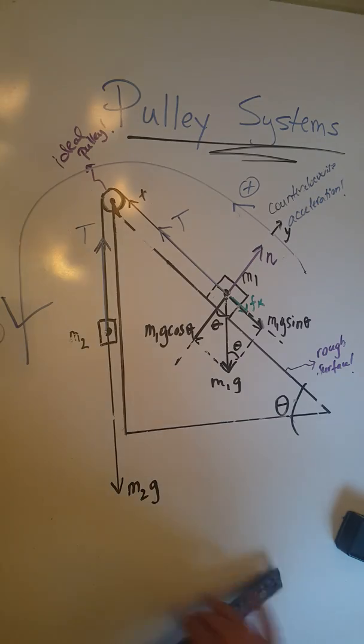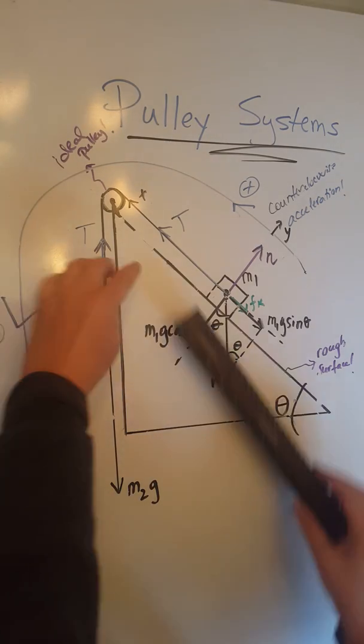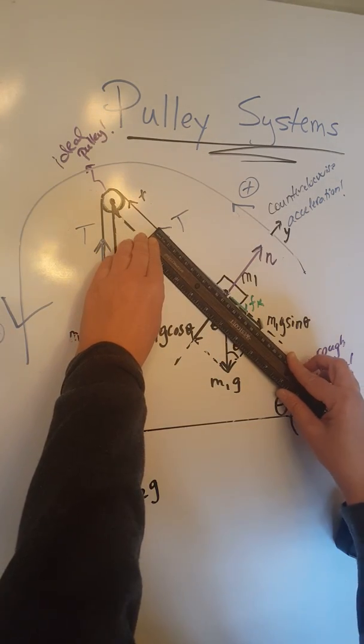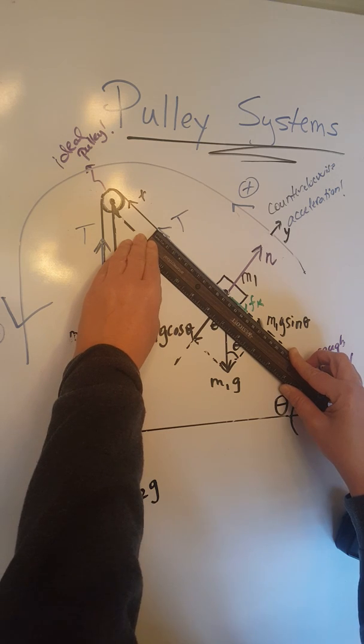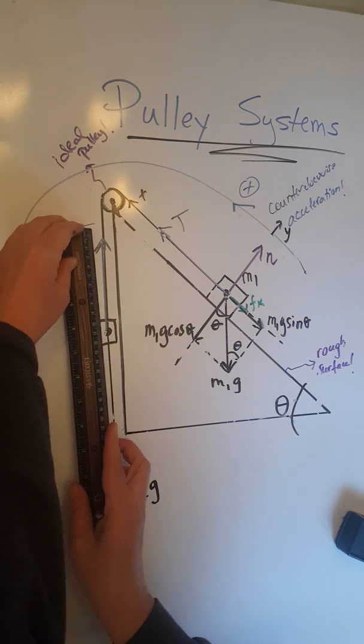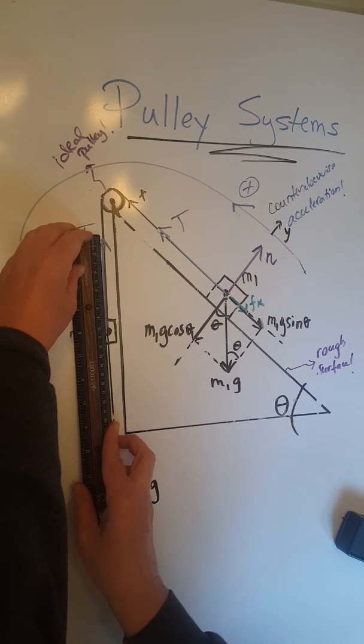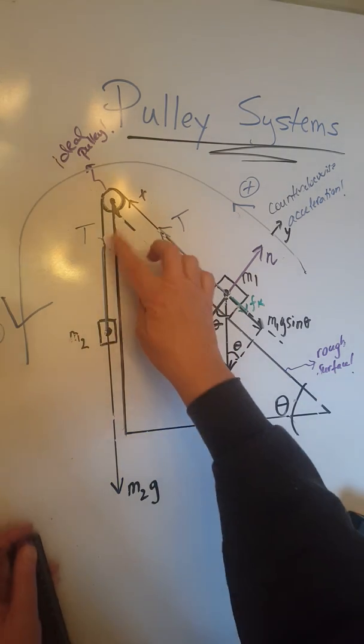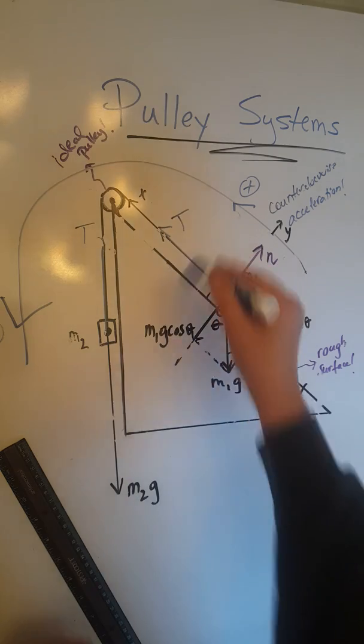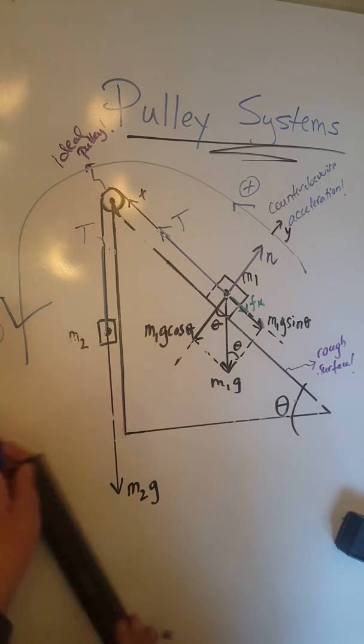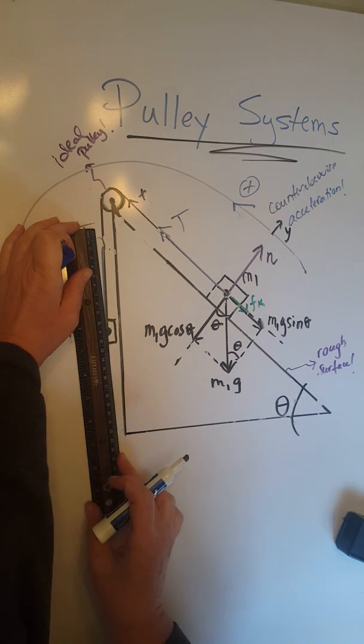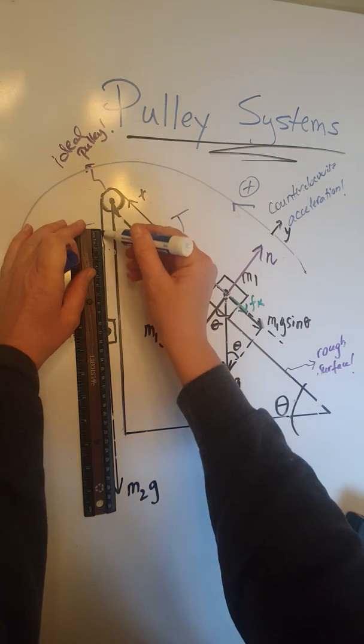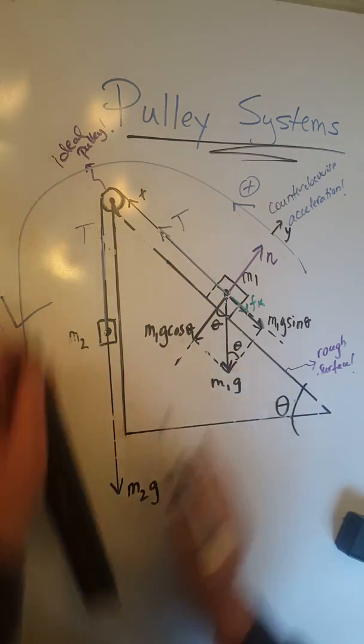Now T, let's make sure that has the same exact magnitude as this T first, otherwise it's a problem. So 11 centimeters here and here, while we only have 10 and a half. I'm going to make this just a little bit longer to make sure that the T from here matches the T from here, because it's the same tension.